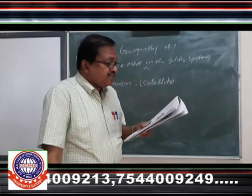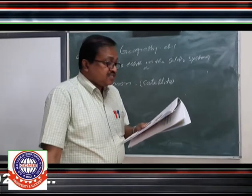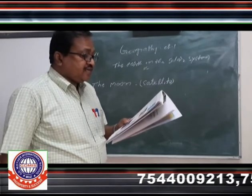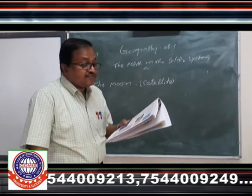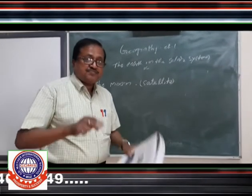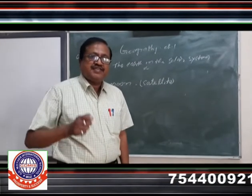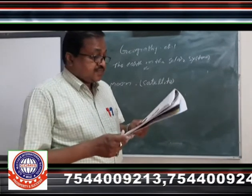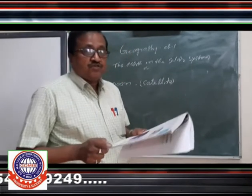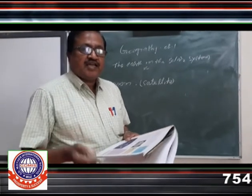The Moon appears big because it is nearer to our planet than other celestial bodies. It is about 3,84,400 kilometers away from us. You can compare this with the distance of the Earth from the Sun. The Moon takes exactly the same time to complete one spin as it does to complete one revolution — so the rotation period and the revolution period of the Moon are the same.